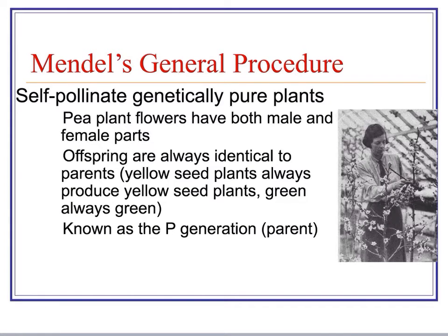We're going to focus on the work that Mendel did and how his initial experiments led him to his first law, which is the law of segregation. We'll also look at how to use Punnett squares to determine probability in genetic crosses.